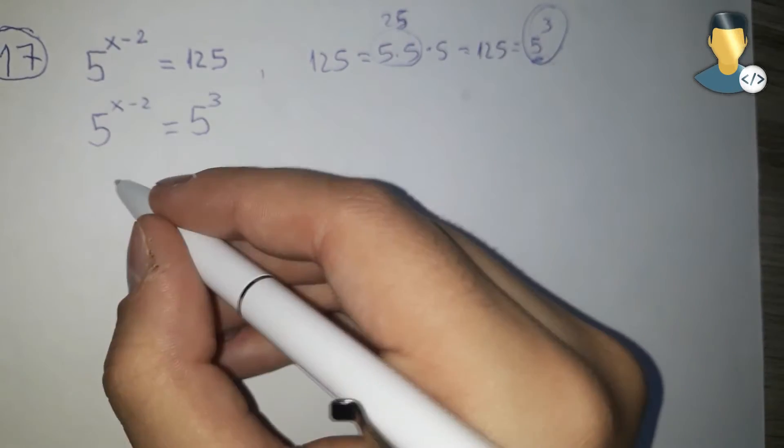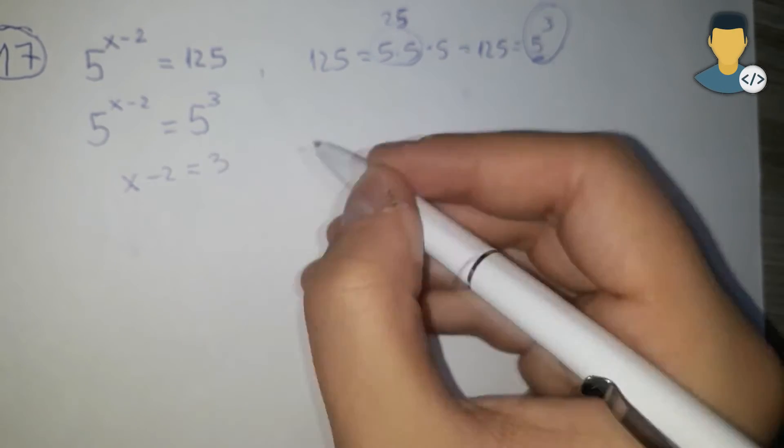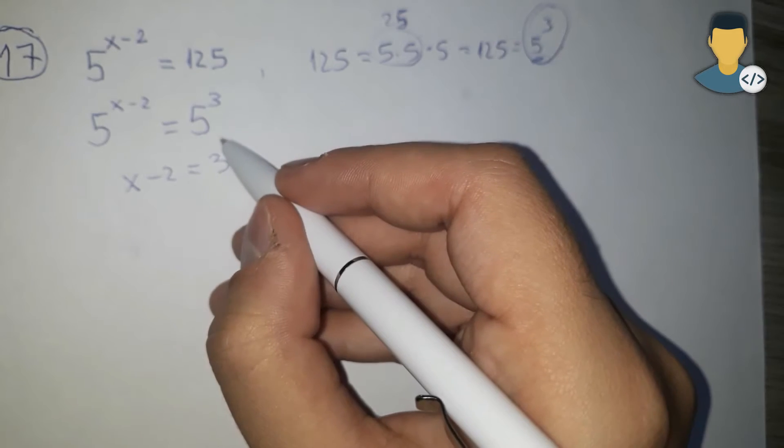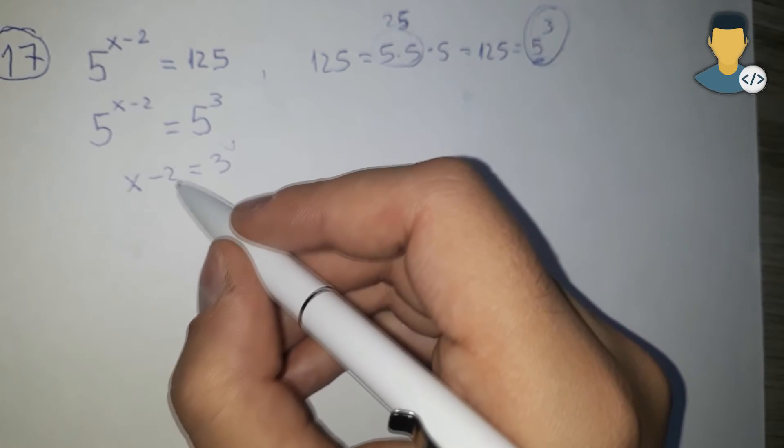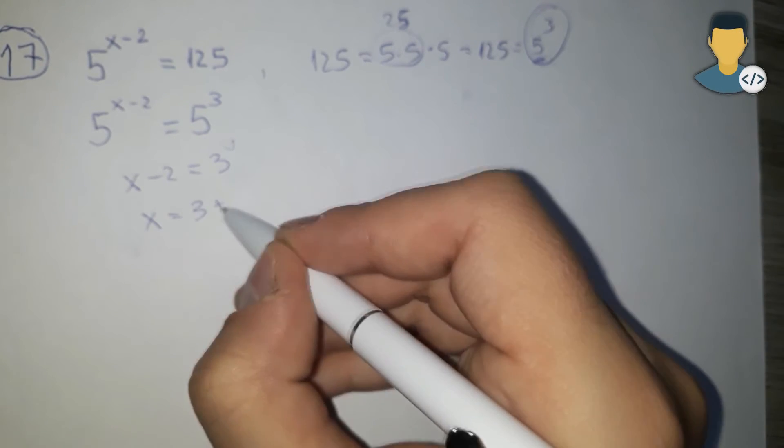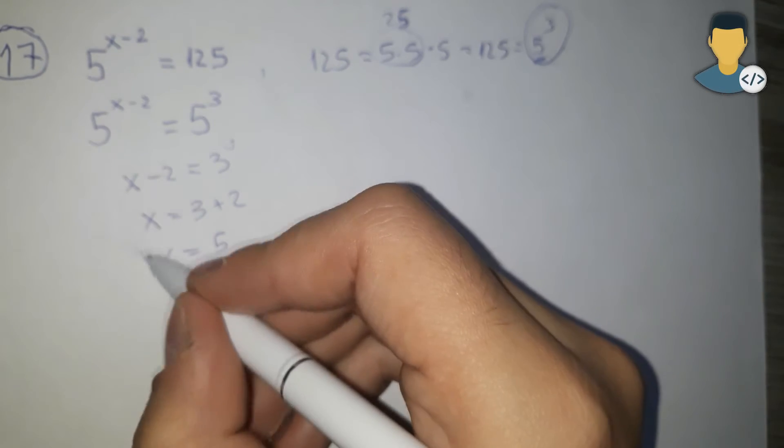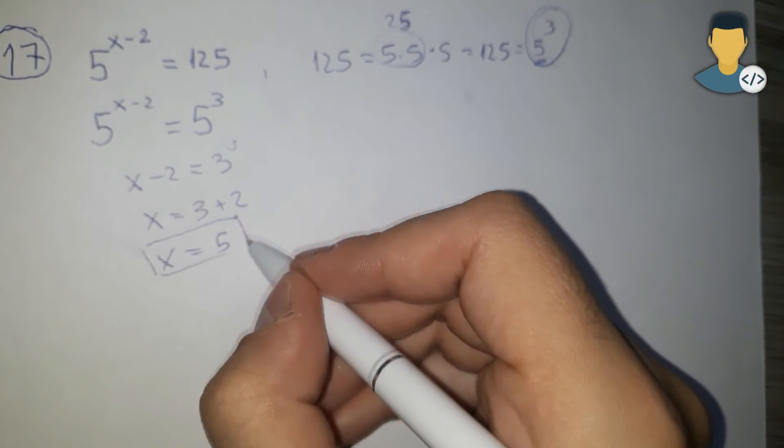And from here we have x minus 2 is equal to 3. And minus 2 goes to other side of the equal sign, it changes the sign, it becomes plus. So we have x equal to 3 plus 2, and x is equal to 5.